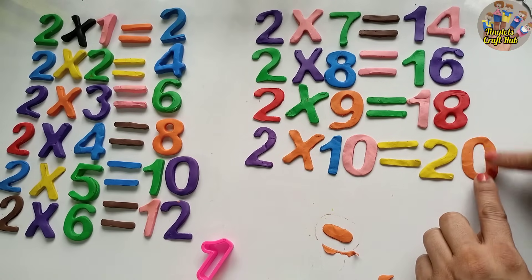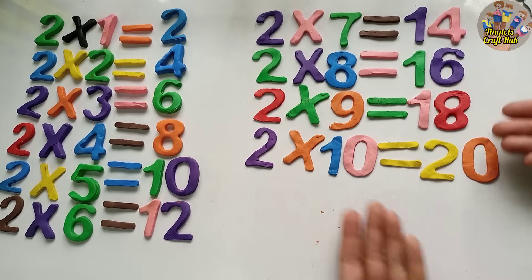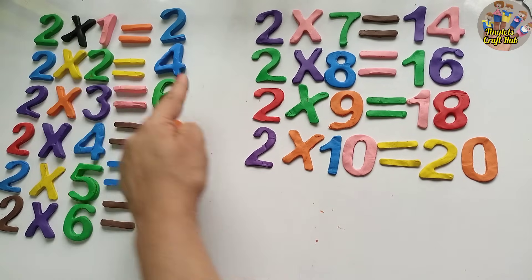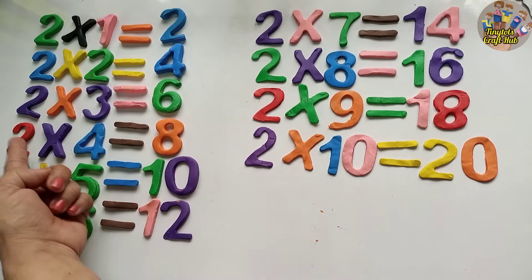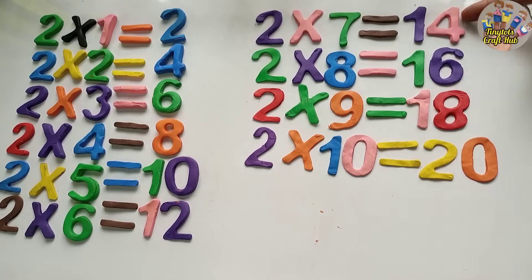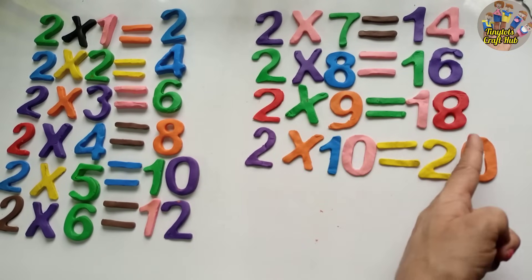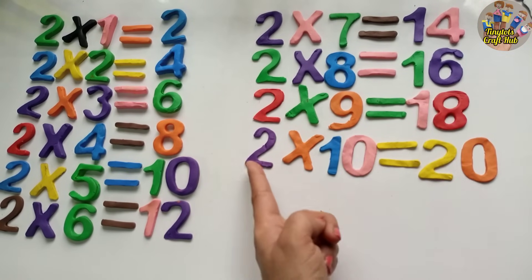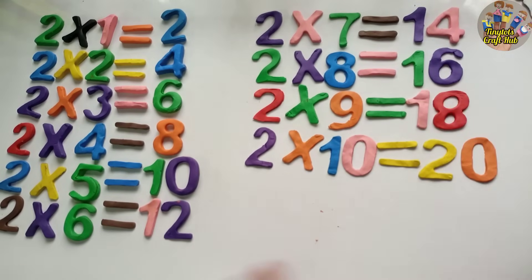Let's revise! Two ones are two, two twos are four, two threes are six, two fours are eight, two fives are ten, two sixes are twelve, two sevens are fourteen, two eights are sixteen, two nines are eighteen, two tens are twenty.